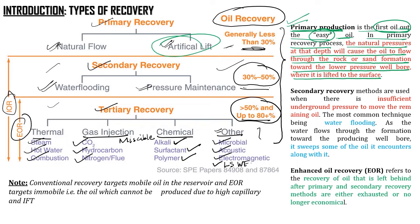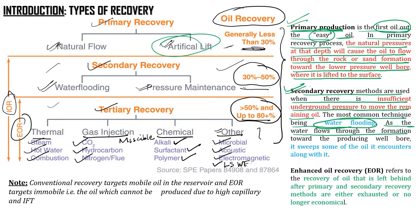Secondary recovery methods are used when there is insufficient underground pressure to move the remaining oil. When reservoir pressure has gone down and there is not enough reservoir pressure to move remaining oil, we go for secondary recovery processes, which try to maintain reservoir pressure. The most common technique is water flooding — as water flows through the formation toward the producing well, it sweeps some of the oil it encounters along with it.